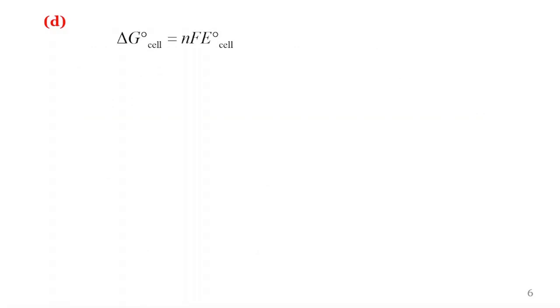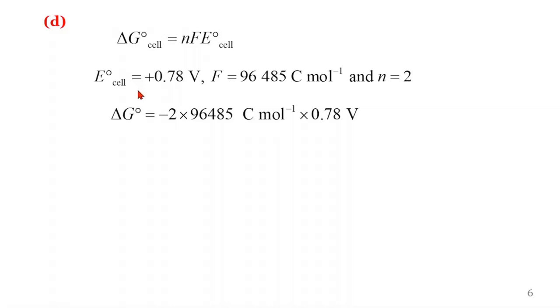To find the standard Gibbs free energy we use the expression ΔG° = -nFE°cell. Already we've got E from the previous sub-question. We substitute E which is plus 0.78 volts, Faraday's constant which is 96,485 coulombs per mole, and n equals 2. We substitute all of this into that expression and obtain negative 150,516 joules per mole, which is approximately negative 151 kilojoules per mole. I should mention, the product of coulomb and volt gives joules.